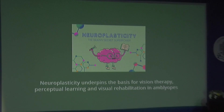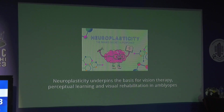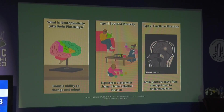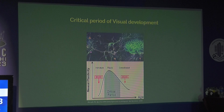Now we'll discuss treating adult amblyopia and all the possible options. I have no financial disclosures. The main thing to address when treating adult amblyopes is neuroplasticity, which underpins the basis for all therapies. Neuroplasticity is our brain's ability to change and adapt — structural plasticity where experiences or memories change the brain's physical structure, and functional plasticity where the brain's functions move from a damaged area to an undamaged area through repeated tasks or therapies.